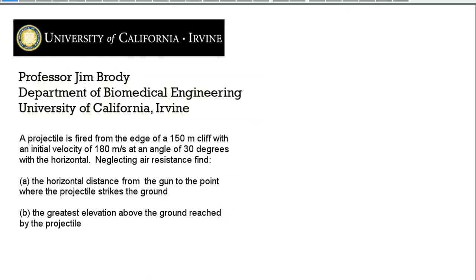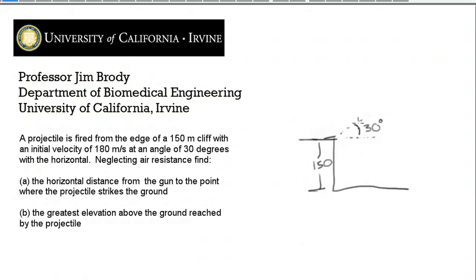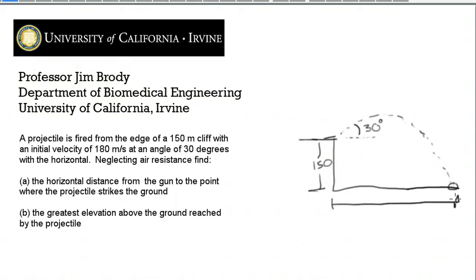First, we're going to sketch this out. So there's my sketch. We've got a cliff 150 meters above the ground. The projectile is launched from the top, at 30 degrees, and it's going to follow a path that goes up and then comes down and hits the ground somewhere out here. Part A is that horizontal distance, and Part B is the maximum height from the ground.